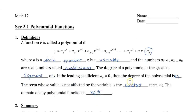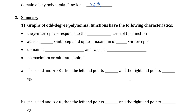Let's take a look at how the graphs look. We're going to break it down into two types of polynomials: those with an odd degree and those with an even degree. If it has an odd degree, it has the following characteristics. The y-intercept will always correspond to the constant term of the function. There is always at least one x-intercept and up to a maximum of n x-intercepts.